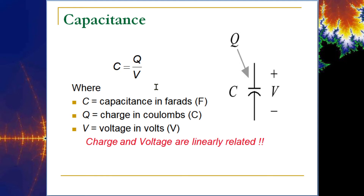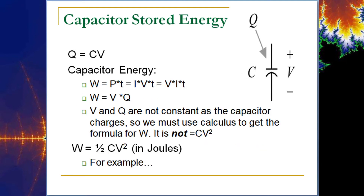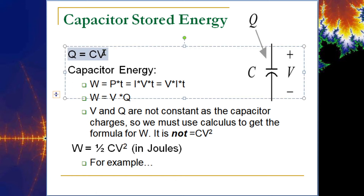Here's the linear relationship Q = CV — straightforward plug-and-chug for exam questions. For capacitor energy, since V and Q are not constant as the capacitor charges, we must use calculus to get the formula. The energy is not simply CV² but one-half CV² — because when you integrate C·V with respect to V, you get the one-half factor out front and V becomes V squared. You don't need to do the calculus in this course, but the equation W = ½CV² may appear on an exam.